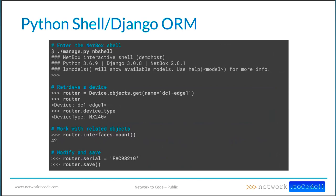In the example shown, first I'm retrieving a device — I'm going to call it 'router,' getting a device named DC-one-edge-one. Then I can check what device type it is, find out how many interfaces are assigned to it using the ORM. If I wanted to set a serial number, I can assign that to the attribute and then call save on the object to update the database. The NetBox shell isn't ideal for ongoing everyday tasks, but it's great for one-off things — for example, if you need to script out the population of a whole lot of data at a certain point in time, like if you've acquired another company and have a whole bunch of data you need to do as a one-off import task. The ORM is great for that.